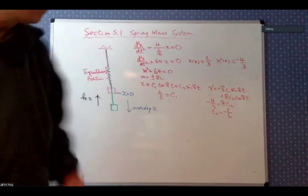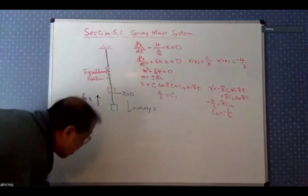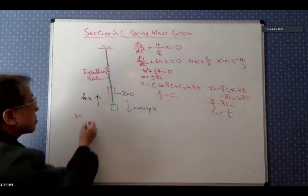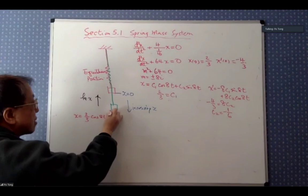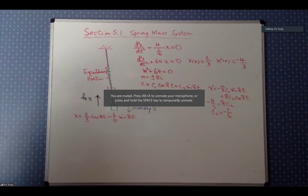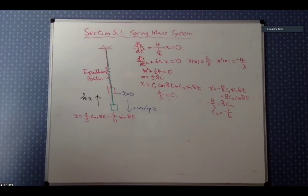So we have C1 = 2/3 and C2 = −1/6. The solution is x(t) = (2/3)·cos(8t) − (1/6)·sin(8t). This is a combination of sine and cosine with the same frequency, which can be combined into one single sinusoid.